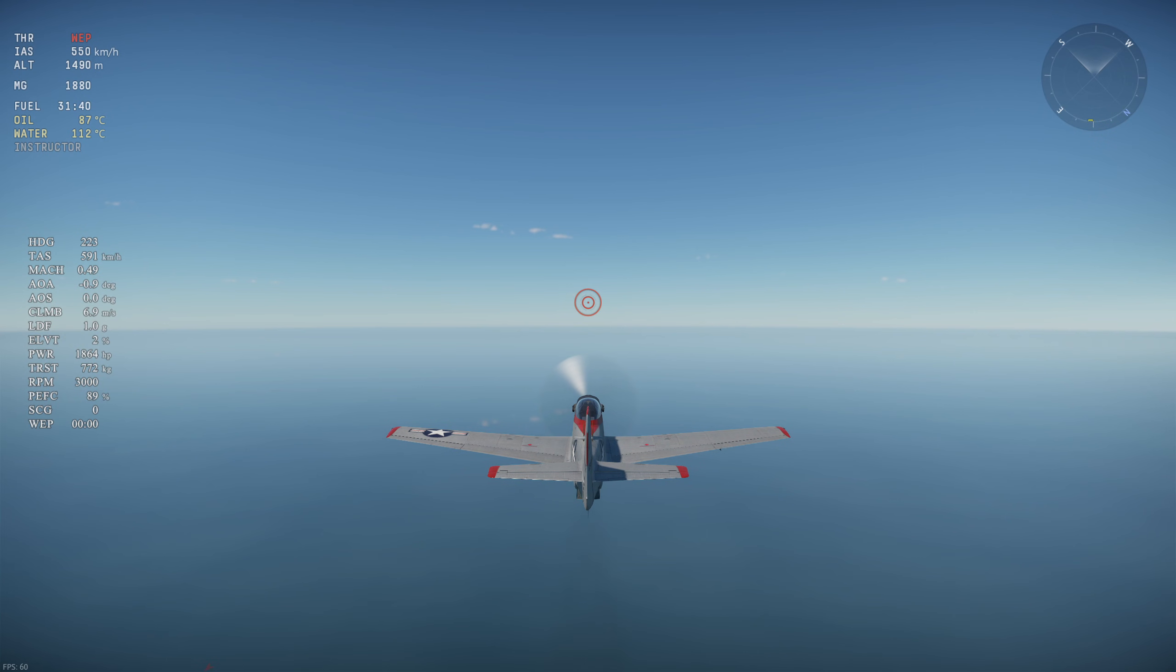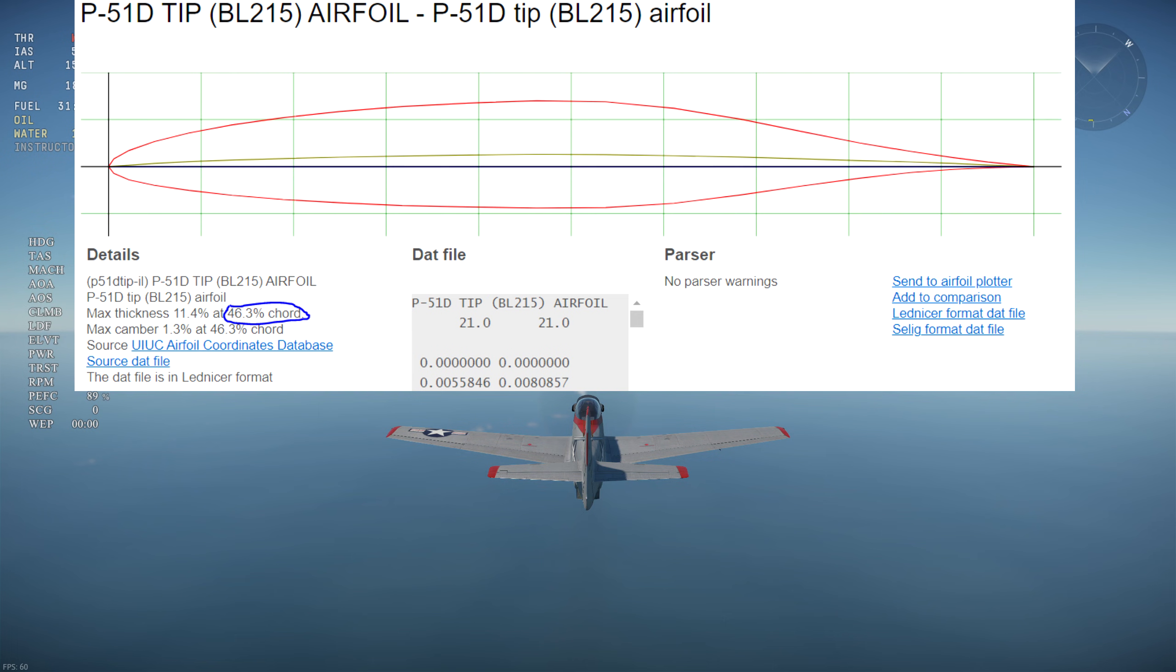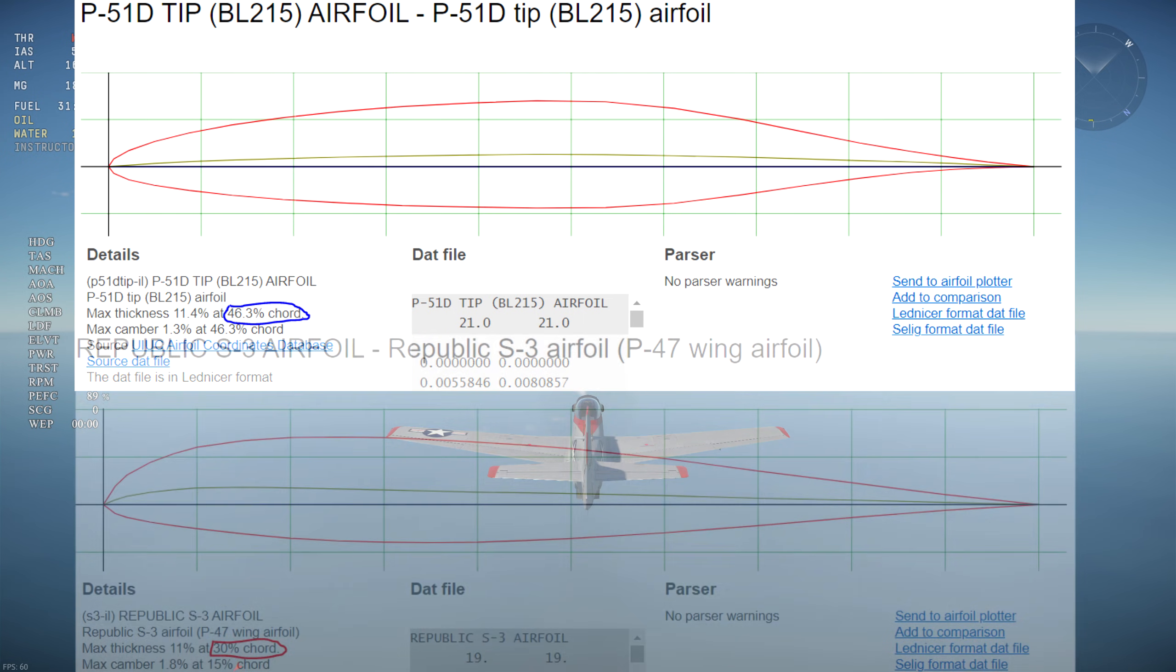What's special about laminar flow airfoils, like on the P-51 Mustang, is that it aims to keep laminar flow over approximately 40% of the chord, compared to a typical 5% of the chord. It achieves this by having its maximum thickness further back from the front of the airfoil at around 45% of the chord, compared to the typical 30% like on the P-47.